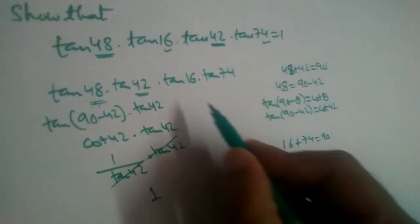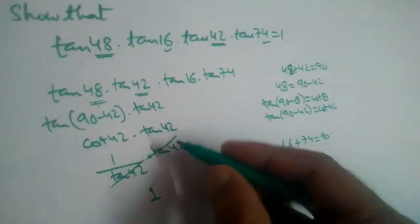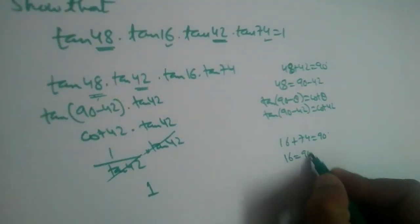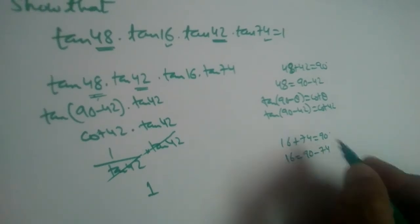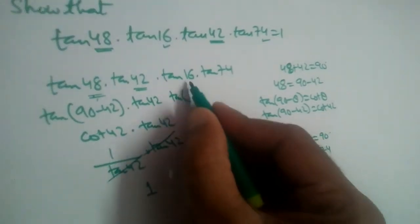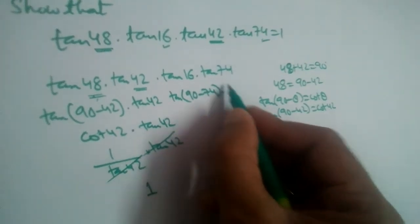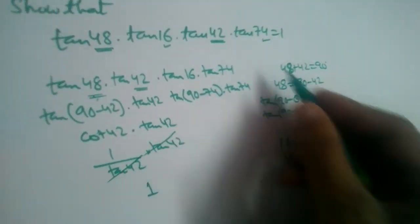In the same way, tan 16° and tan 74° will be equal to 1. Let us see that. Let us change 16, so 16 will become 90 minus 74. tan 16°, we are writing it as tan(90° - 74°) multiplied by tan 74°.